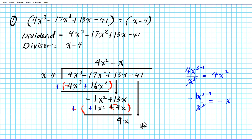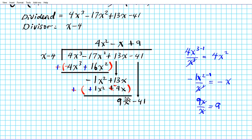We repeat the same procedure: how many times does x go into 9x? Dividing 9x by x — the x's cancel and we're left with 9. We place positive 9 in the constants column of the quotient and distribute 9 across x minus 4, giving us positive 9x minus 36.